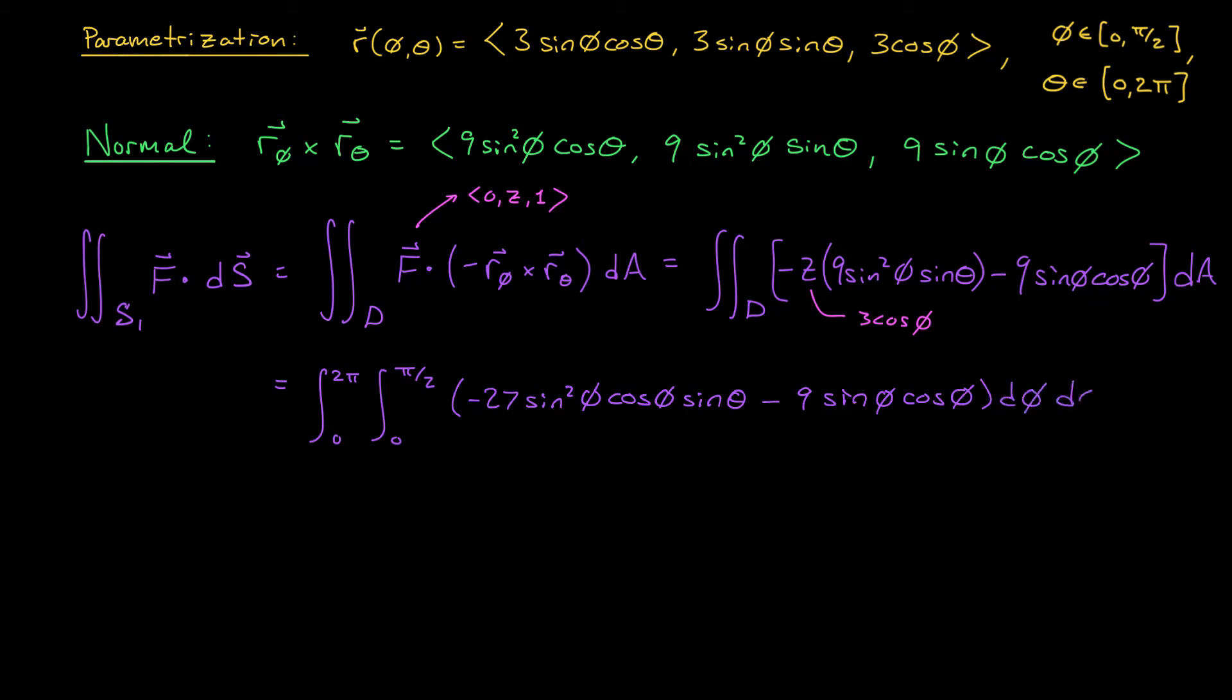At this point, we have to evaluate our iterated integrals, starting with the integral with respect to φ. Now, this might look a little bit complicated, but a substitution will clean this up real fast. Notice that we have lots of sin φ cos φ terms lurking around. So if we set u = sin φ, we would get du = cos φ dφ. And therefore, this integral can be written as the integral from 0 to 2π, the integral from 0 to 1 of −27u² sin θ − 9u du dθ. Much nicer, right?